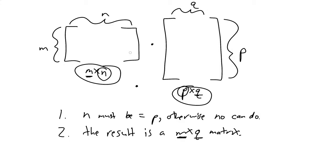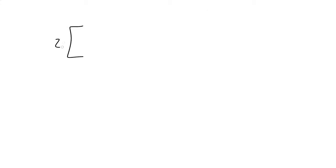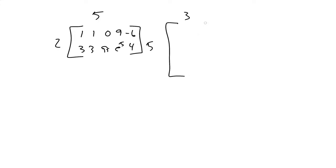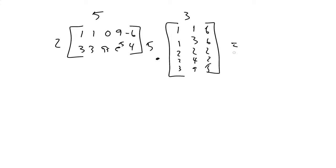So if you think about how this plays out — let's say I have a 2 by 5 matrix and I've got a 5 by 3 matrix, and I want to multiply these two together. We know we can do it because this one has five columns and this one has five rows, therefore the operation makes sense — N does equal P — and the answer we're going to get is going to be a 2 by 3 matrix.